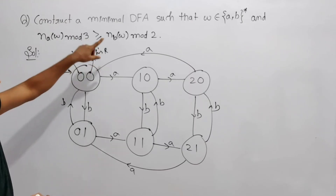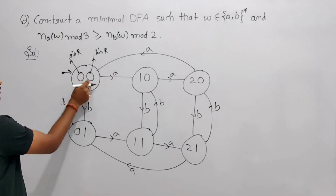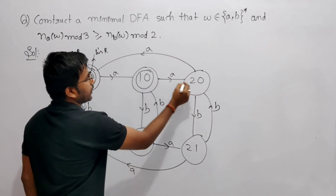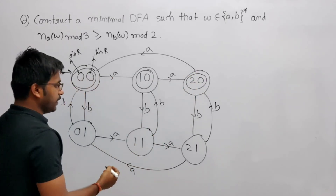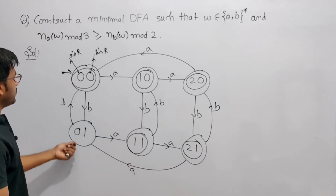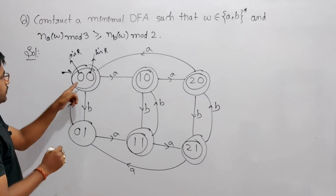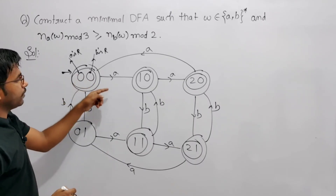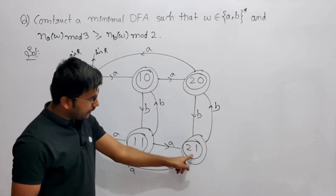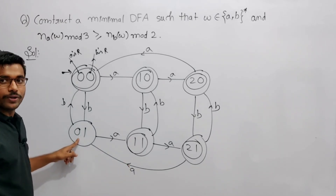Now wherever a's remainder is greater than or equal to b's remainder, that state is a final state. State (0,0): equal — final state. (1,0): greater — final state. (2,0): greater — final state. (1,1): equal — final state. (2,1): greater — final state. State (0,1) is not a final state since a's remainder 0 is not greater than or equal to b's remainder 1.